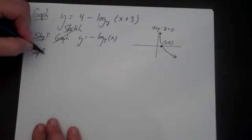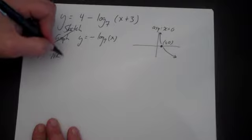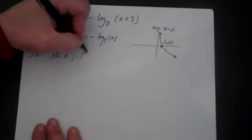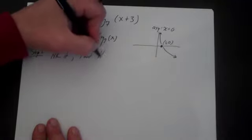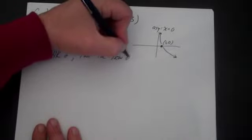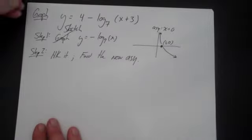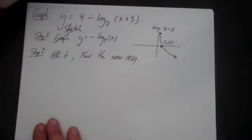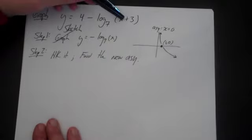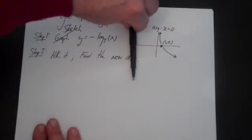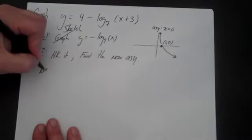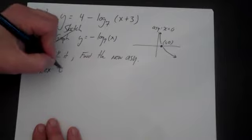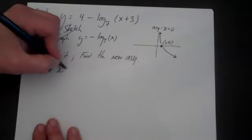Step 2 is I'm going to h,k it. And I'm going to find the new asymptote. The old asymptote was x equals 0. If I move it up 4, it doesn't affect it. I'm going to move this left 3. So when you move it up 4, it doesn't change. But when you move it left 3, the new asymptote is x equals minus 3.